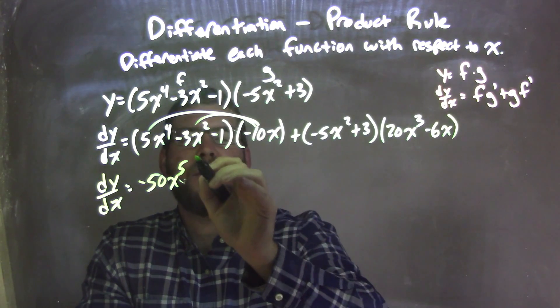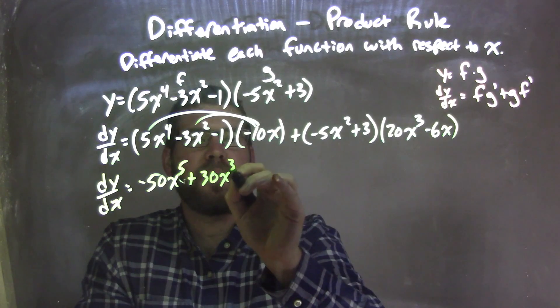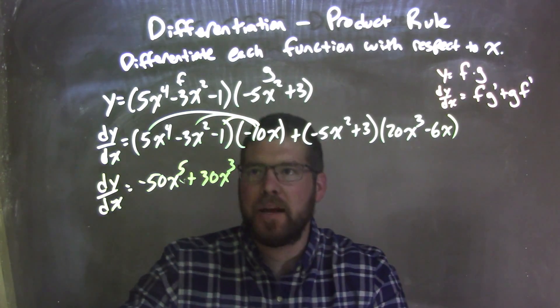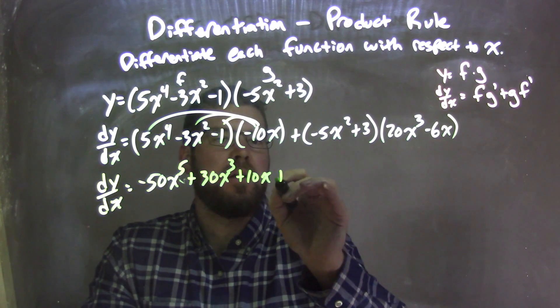Negative 10x times negative 3x squared is positive 30x to the 3rd, and negative 10x times negative 1 is positive 10x. And we're adding it together.